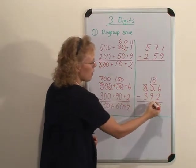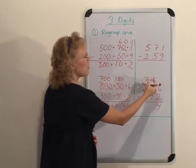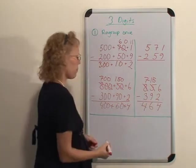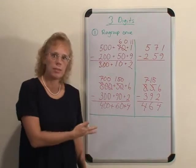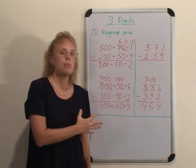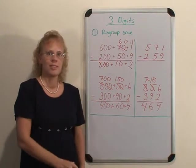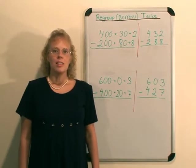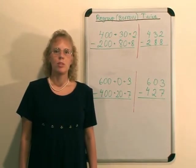Like that. Over here, similarly, 6 minus 2 is 4, 5 minus 9 you cannot do, so you borrow from here, leaving 700 and 15 tens. After these we will then go on to the situation where the child has to regroup two times or borrow two times.